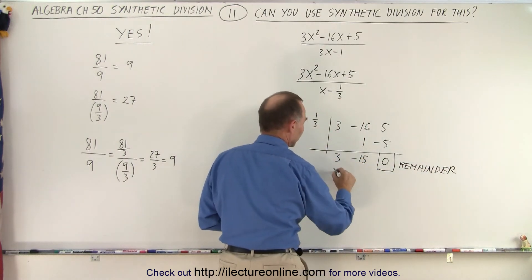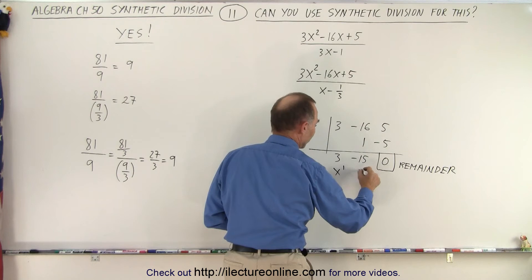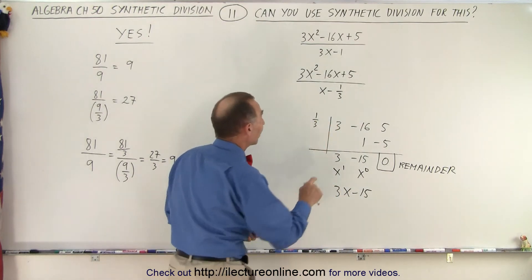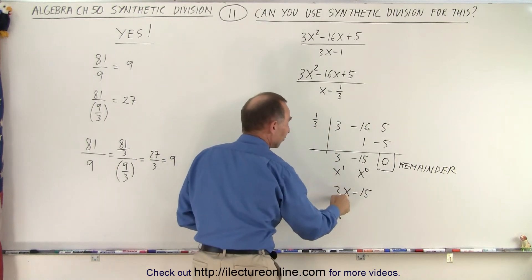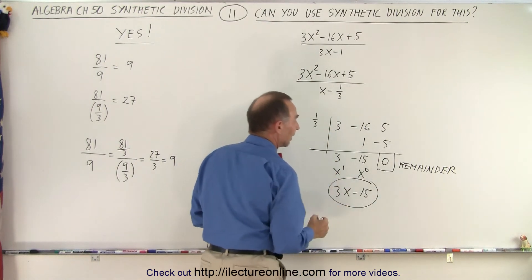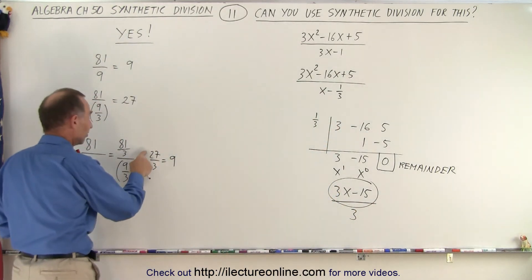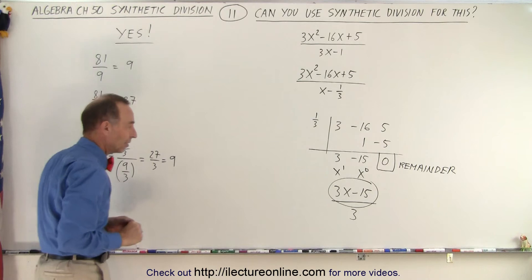And when I interpret this, remember this is x to the first power, x to the 0 power, I end up with 3x minus 15. But remember, since I divided the denominator by 3, my answer is 3 times too big. So I have to take that and divide it by 3 to get the correct answer. Just like I take 27 here, divide it by 3 to get the correct answer.